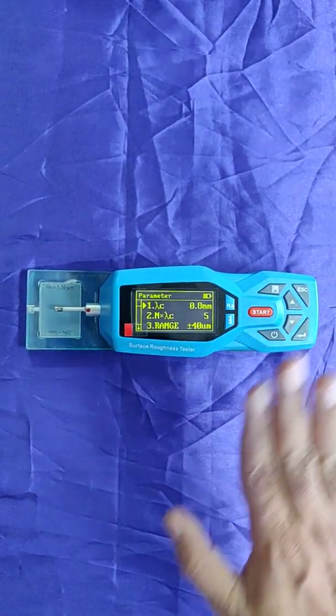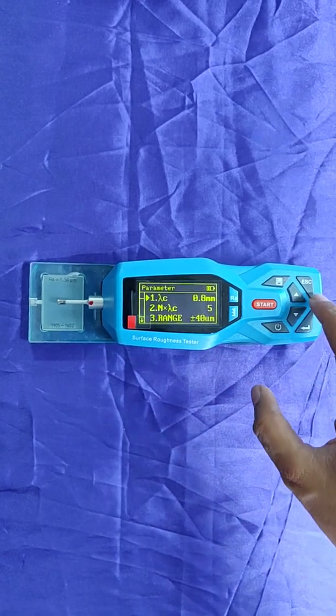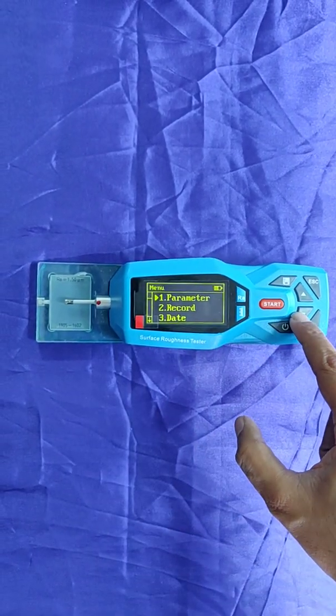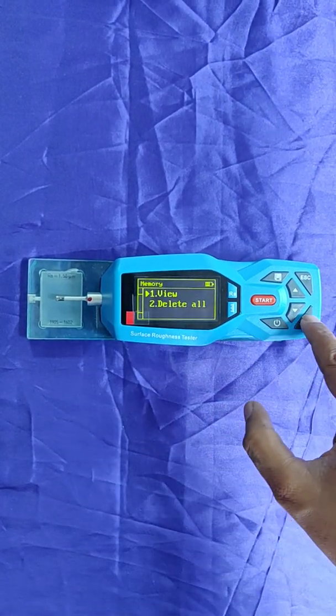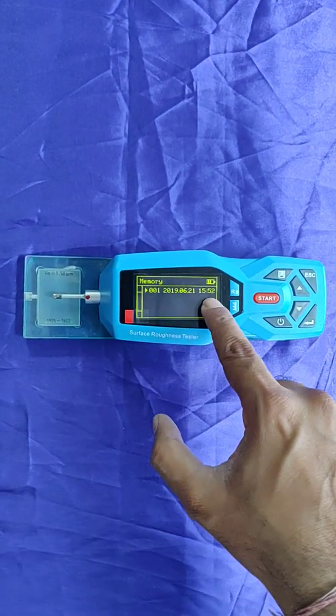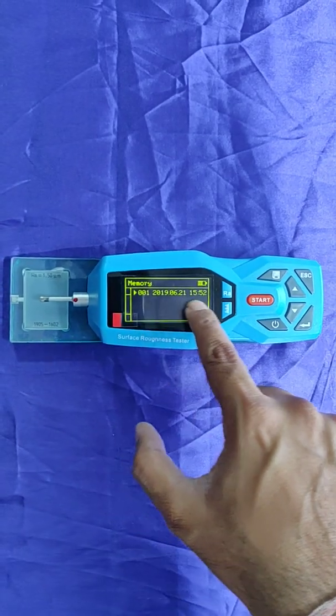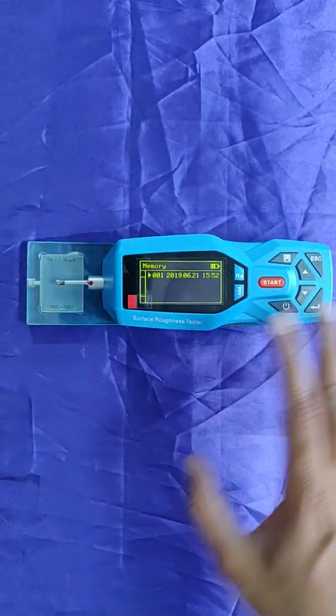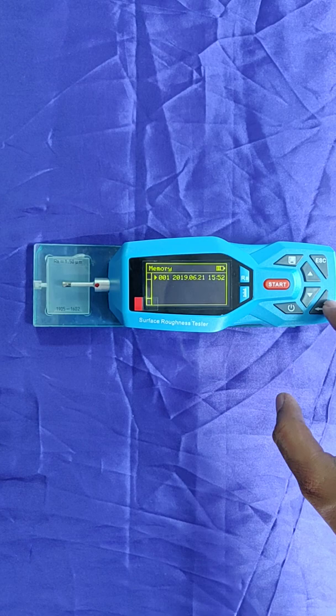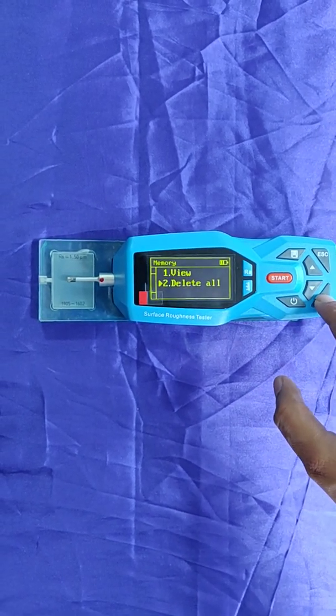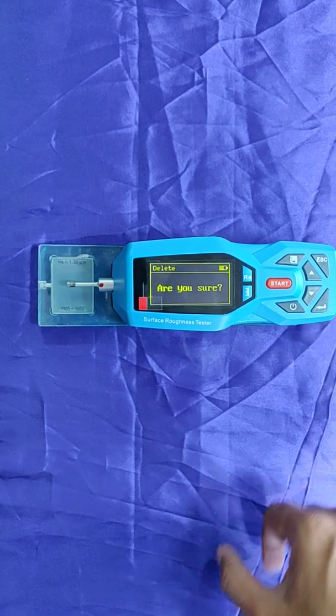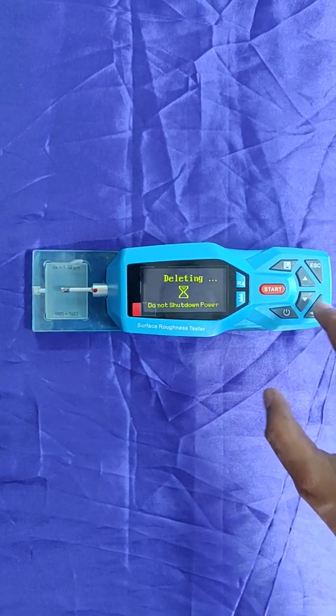These are the main parameters. We go back again. This is parameter record. If you want to check the data view, we have taken one reading at 1552 right now, but there's no data right now. So we go back. If you want to delete, we delete all. Delete all, are you sure? Yes. Delete is complete.